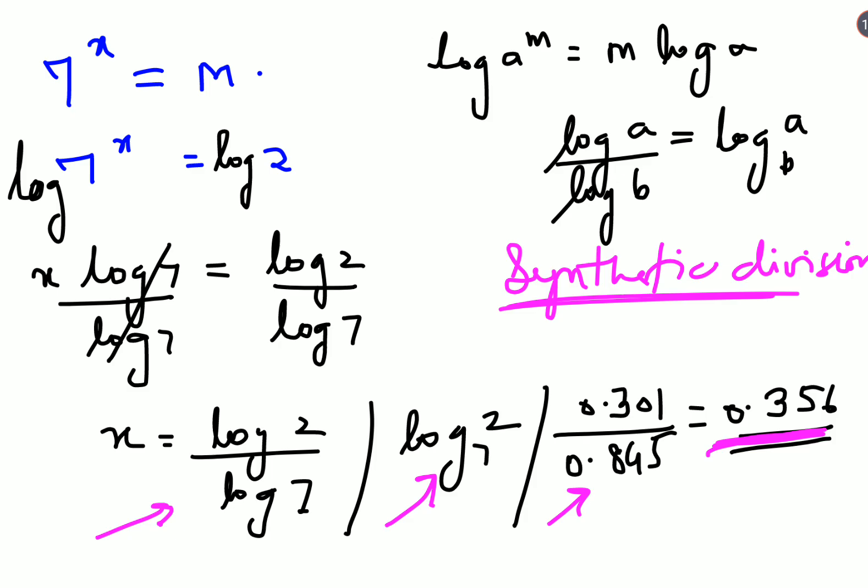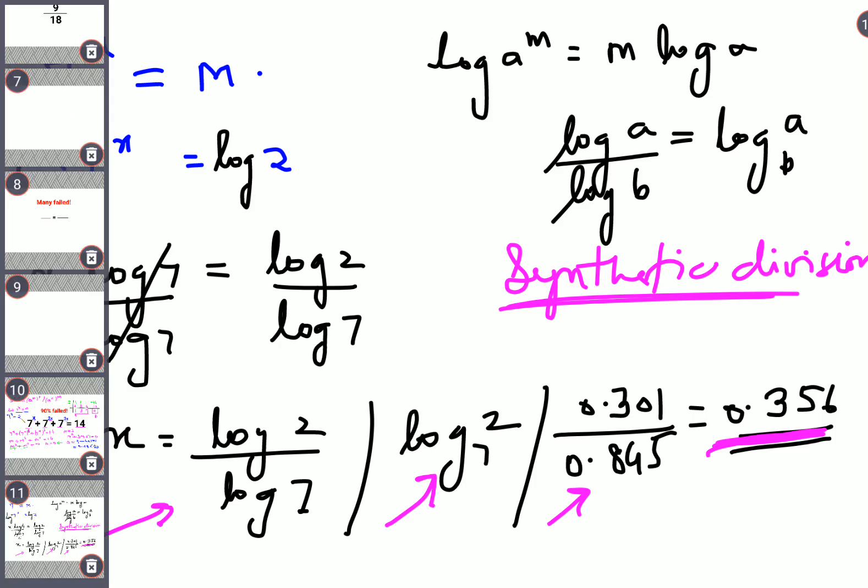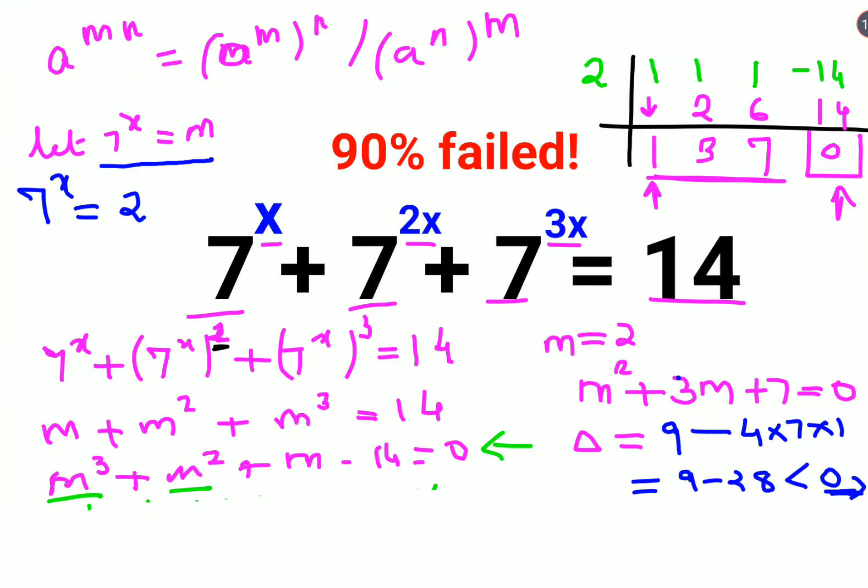Now please understand when you look at this particular question, we had the question as 7 raised to x plus 7 raised to 2x plus 7 raised to 3x equals to 14. Now please understand 7 raised to 1 equals to 7. 7 raised to 2 gets you 49.